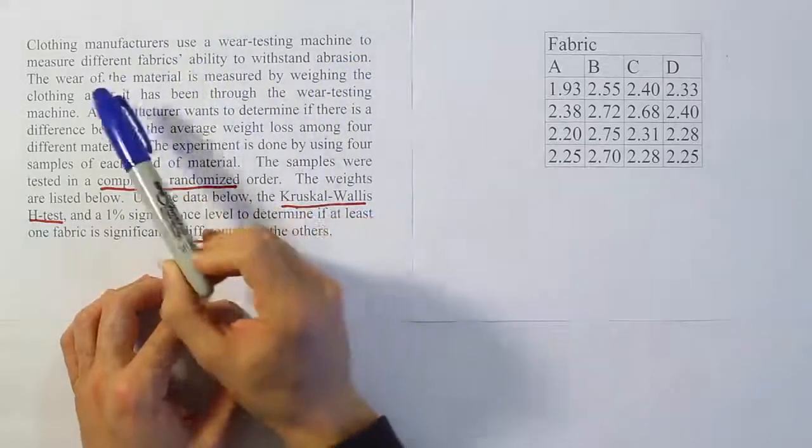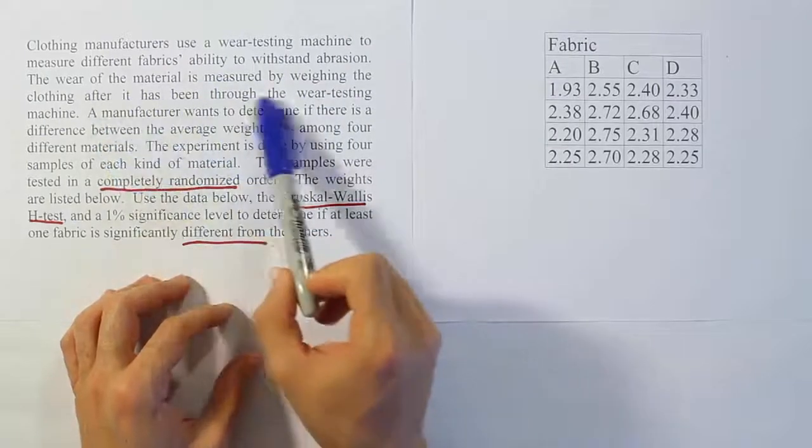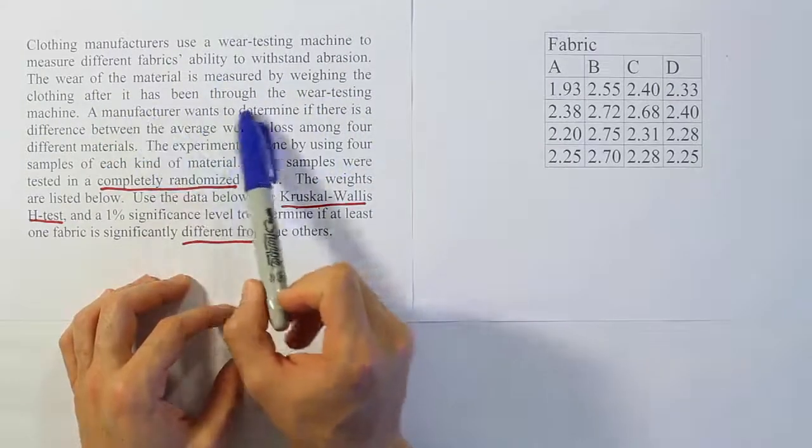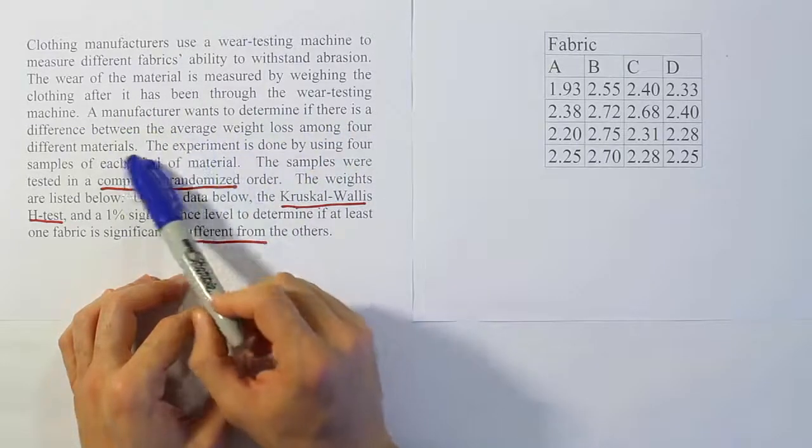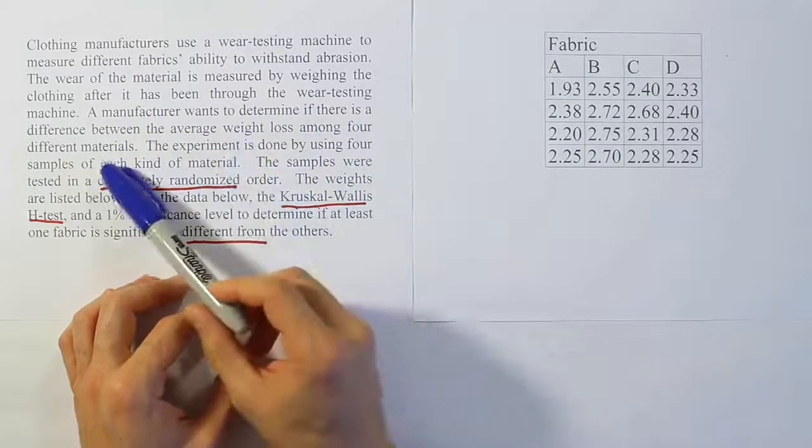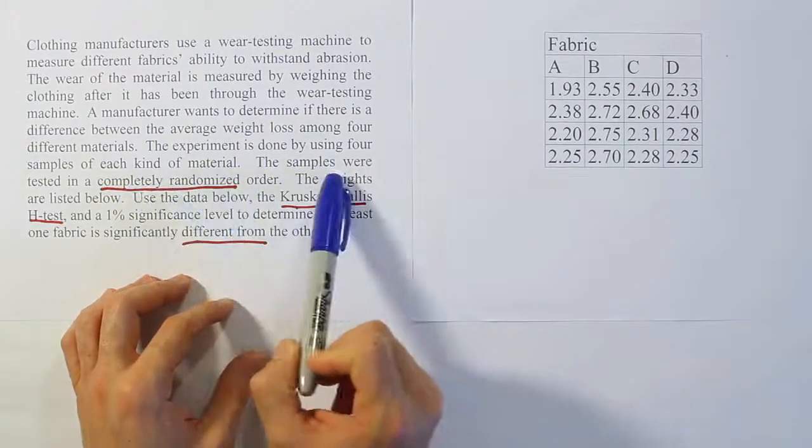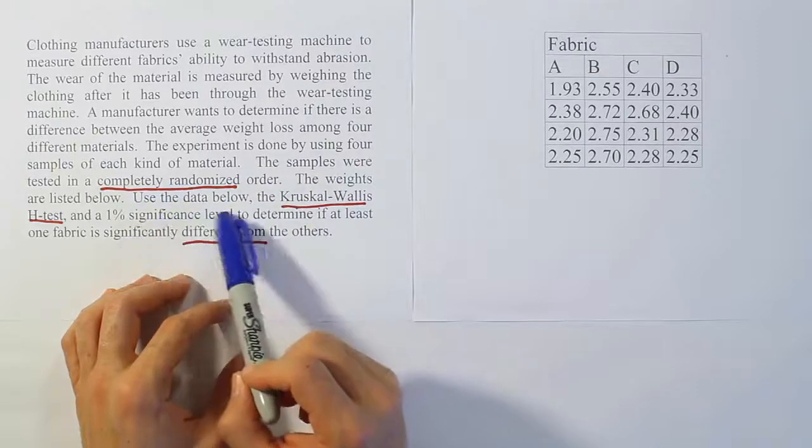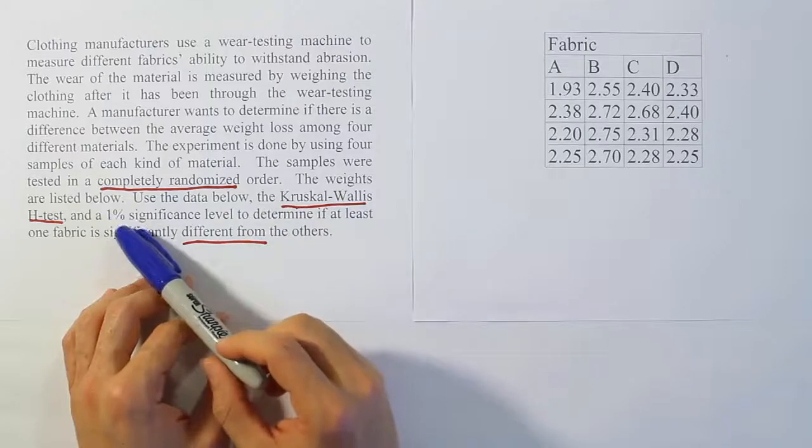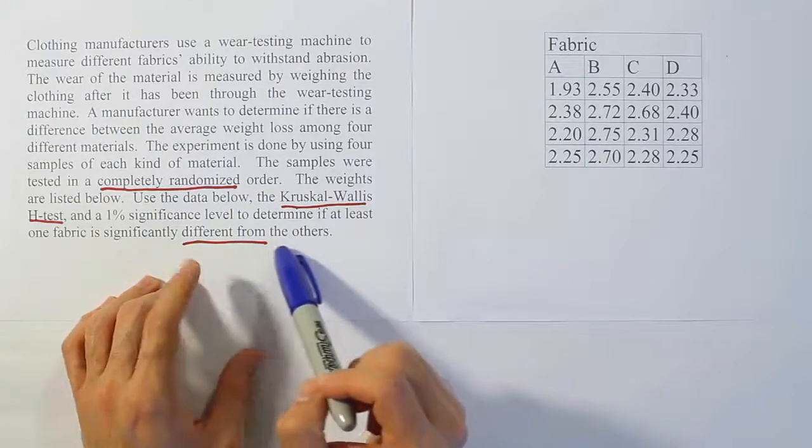Clothing manufacturers use a wear testing machine to measure different fabrics' ability to withstand abrasion. The wear of the material is measured by weighing the clothing after it has been through the wear testing machine. A manufacturer wants to determine if there is a difference between the average weight loss among four different materials. The experiment is done by using four samples of each kind of material. The samples were tested in a completely randomized order.